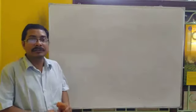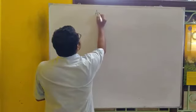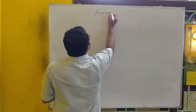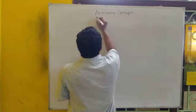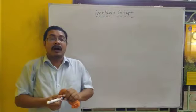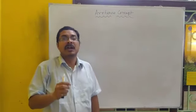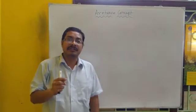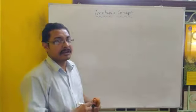Good morning everybody. Today's topic is Arrhenius concept of acid base. Arrhenius concept was the first scientific explanation of acids and bases in 18th century, given by scientist Arrhenius in 1894.